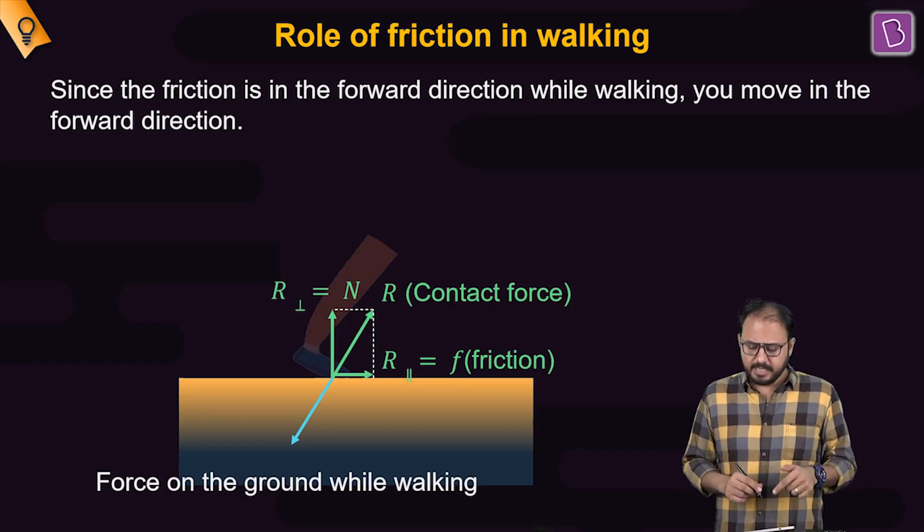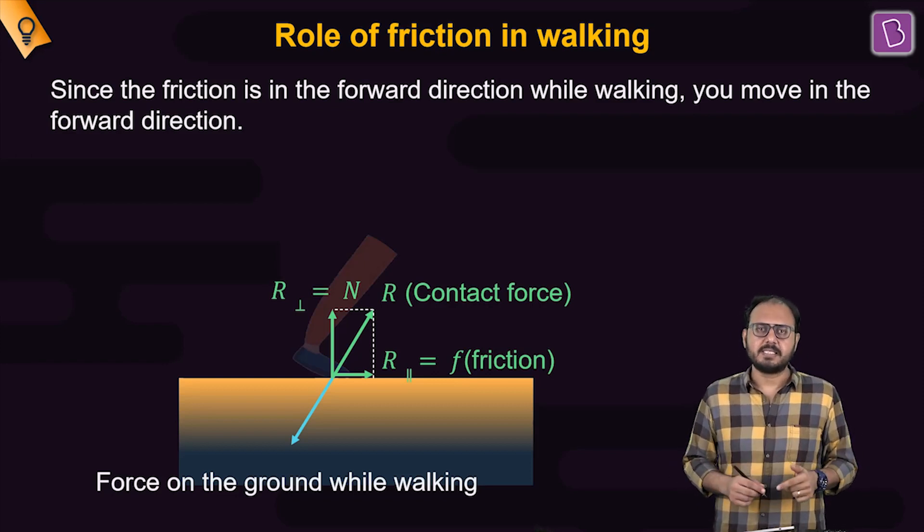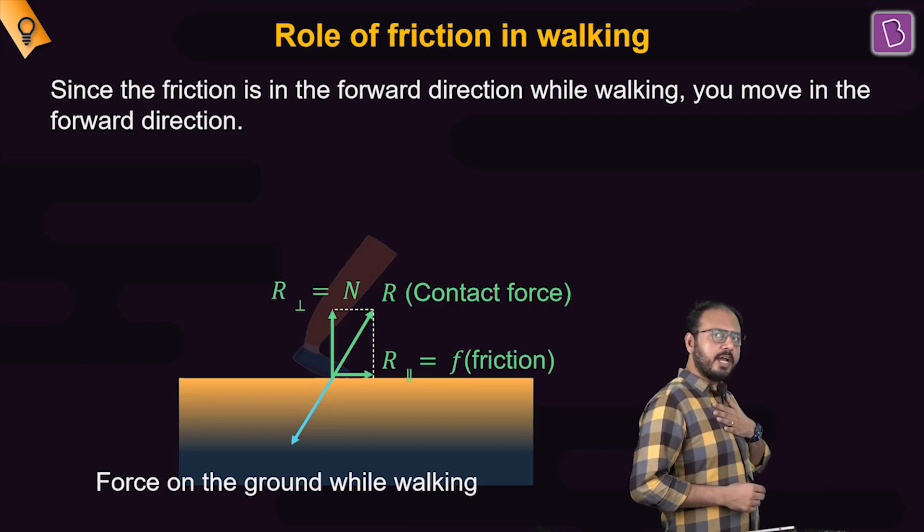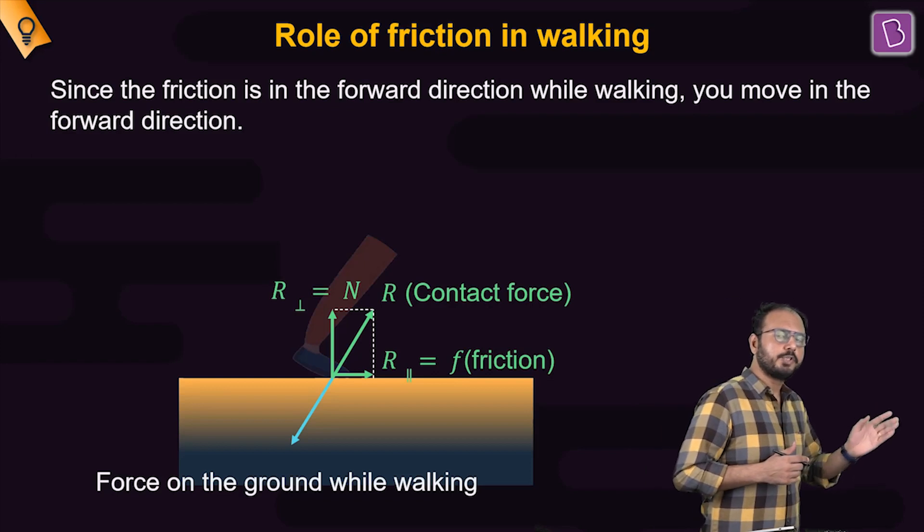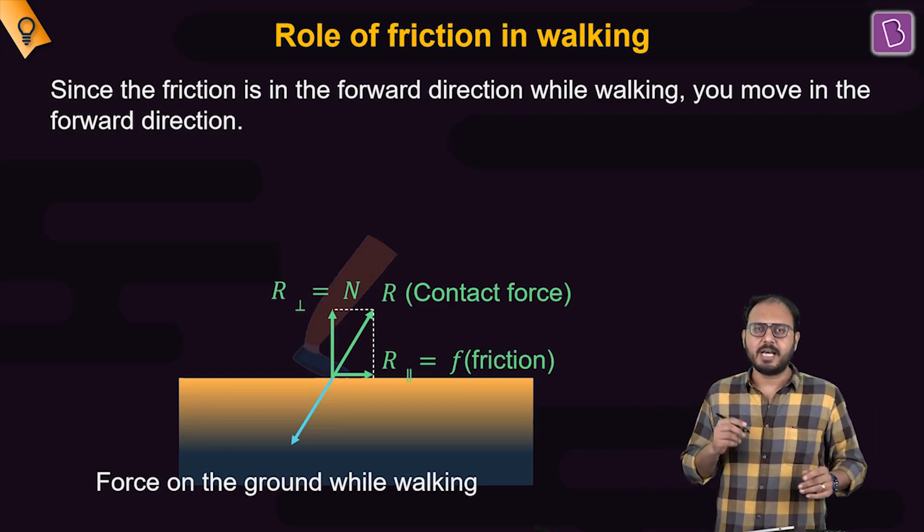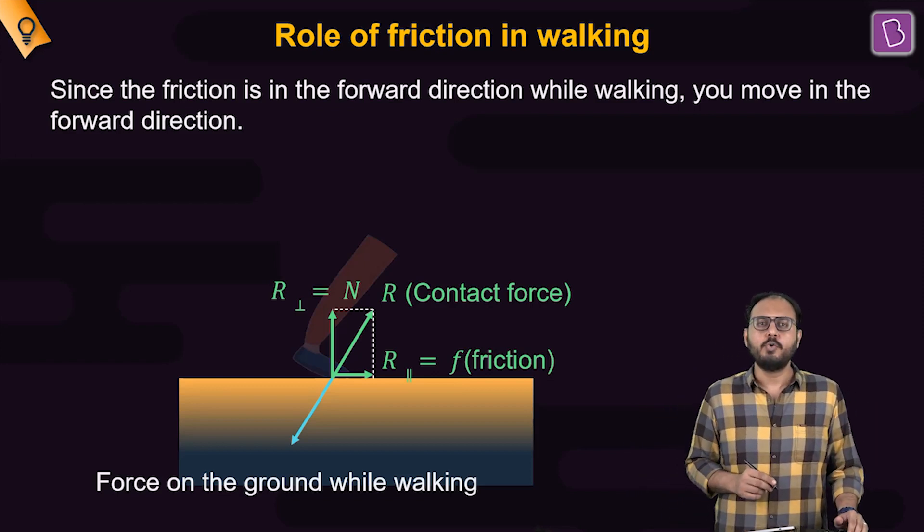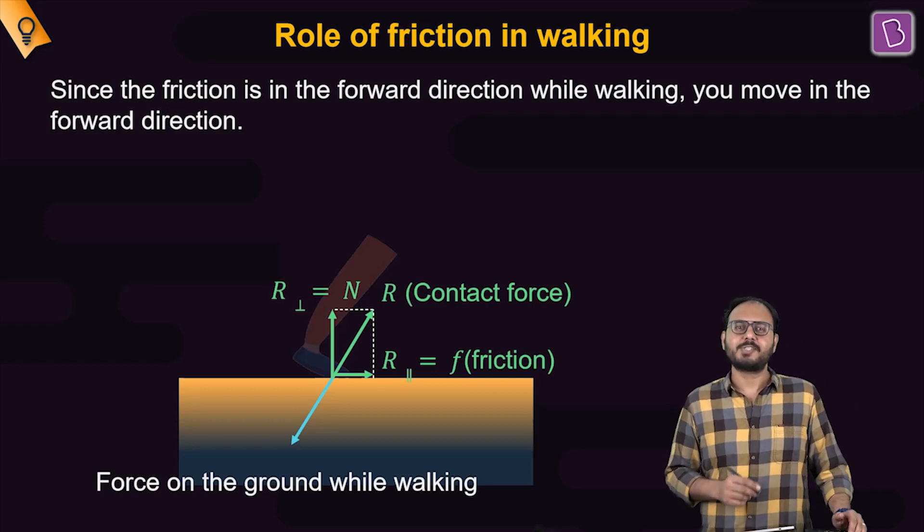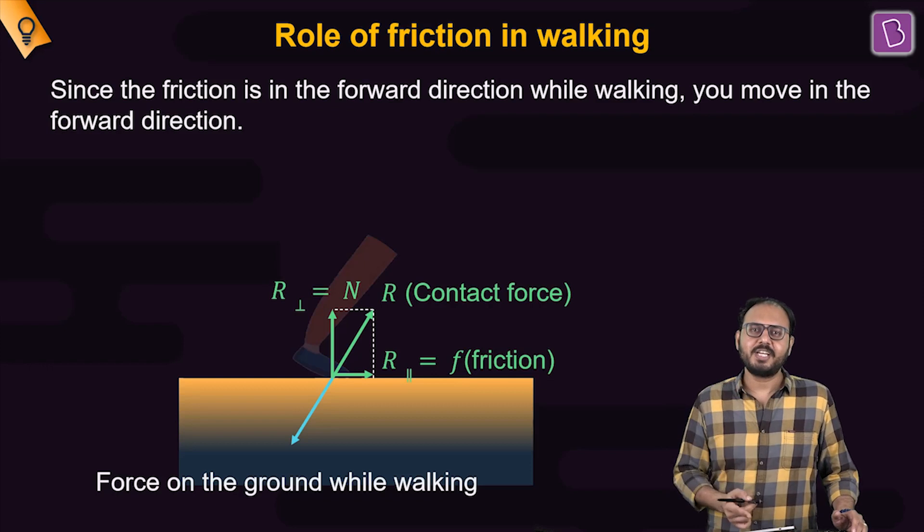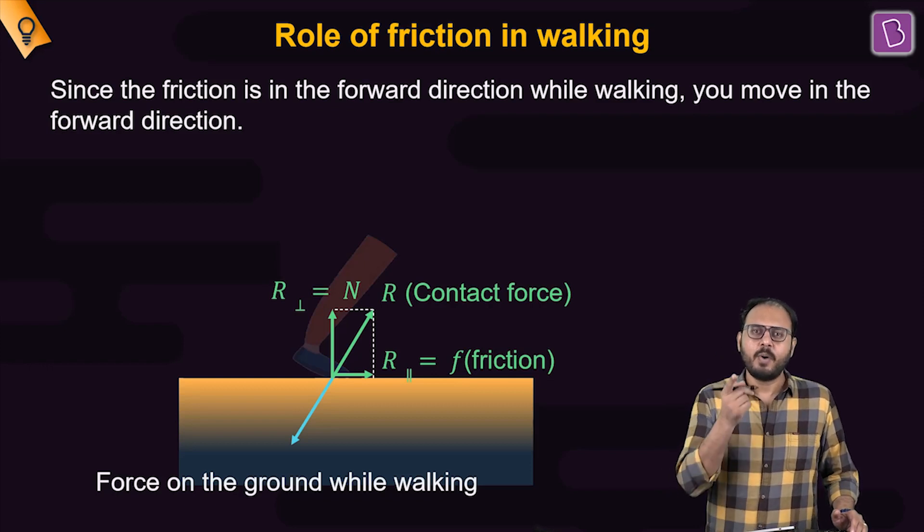But right now, the physics of walking is: take a stride, lean a little forward, push the ground back, the ground pushes you forward. And the component which is along your line of motion is who? The good old friction. The poor, misunderstood friction. Friction is the reason why you walk.